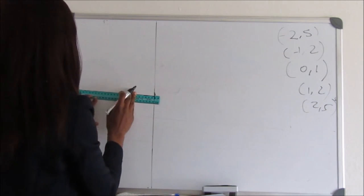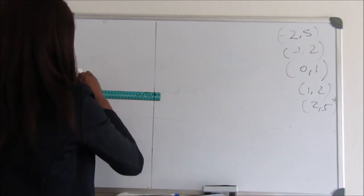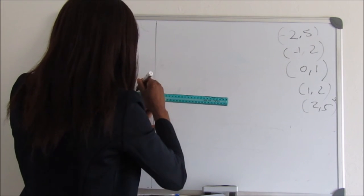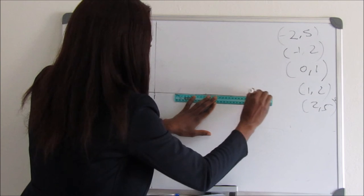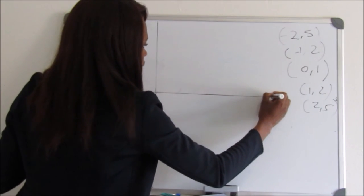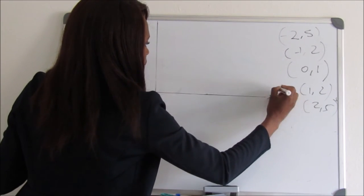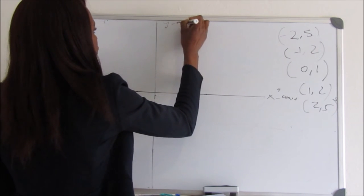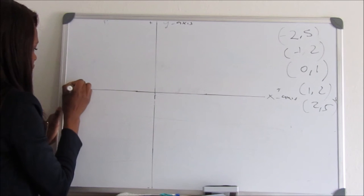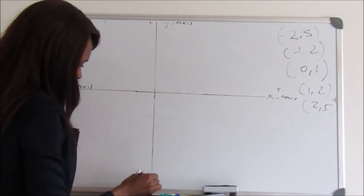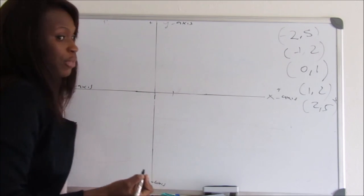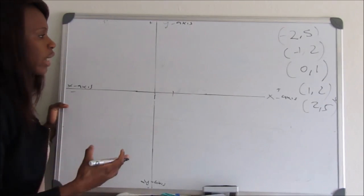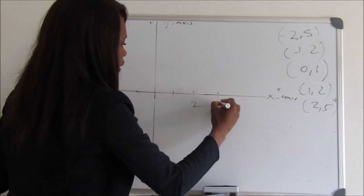Remember to always name your axes and show which side is positive and which side is negative. This is our x-axis positive side, this is our y-axis positive side, this is our x-axis negative side, and this is our y-axis negative side. Note that this graph is not drawn to scale — it is just a rough sketch.